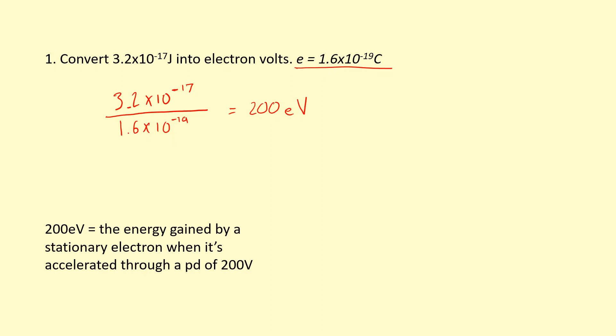Another way to interpret 200 electron volts is the energy gained by a stationary electron when it's accelerated through a potential difference of 200 volts. For example, if I have a stationary electron here with U equals zero and a positive plate on this end, it's going to start to speed up. By the time it reaches this end, it's going to have energy corresponding to 200 electron volts, in other words 3.2 times 10^-17 joules.